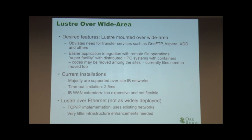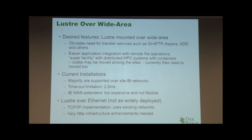Most installations I'm familiar with are IB-based, and that's what we wanted to export to long haul. The main challenge is the IB timeout of 2.5 milliseconds. We could use WAN accelerators — Obsidian makes them and you can extend IB almost natively — but they're extremely expensive and you need to bookend each connection with one of those devices. So what we'd like to use is Lustre over Ethernet. Once you do that, traffic goes over IP networks and you have to deal with TCP and its dynamics over long hauls.